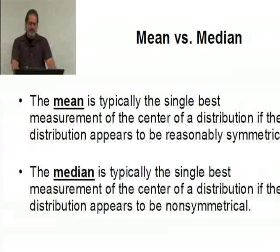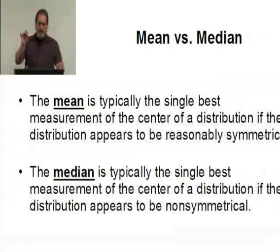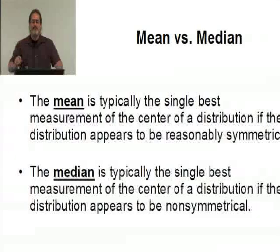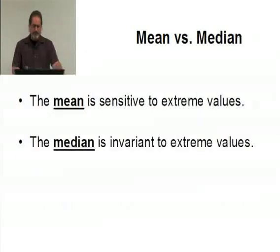The mean is typically thought of as being the single best measurement of the center of a distribution if the distribution is symmetric. If the data is not symmetric, if you look at the histogram and the thing is not symmetric, then the median is typically thought of as being the single best measurement. The reason for that is the mean is extremely sensitive to extreme values.